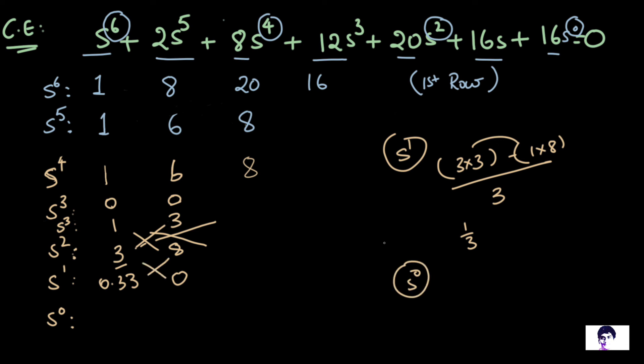And finally, for the element of S^0, that would be 0.33 into 8 minus 0 into 3 is 0 by 0.33. So that would be 8. Our Routh array is now complete.